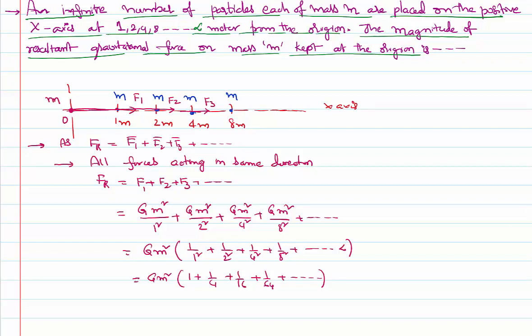And there are infinite terms. So you know, for infinite term summation of GP, we have a formula: a by (1 minus r). So let us use that concept and find out the resultant. F_resultant force at the origin is...